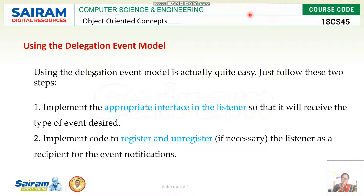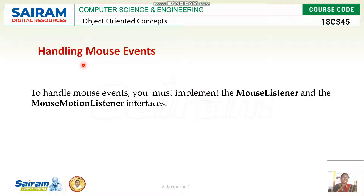The Delegation Event Model is performed in a quite easy way. There are two steps followed: first, implementing the appropriate interfaces in the listeners so that the corresponding event listeners are implemented correctly. Second, the recipient for the event should be registered or unregistered. These two steps — registering and unregistering — are essential for handling events in the delegation model.